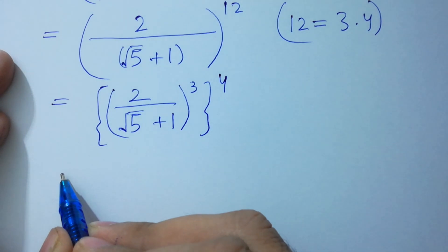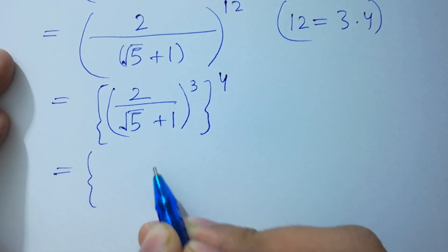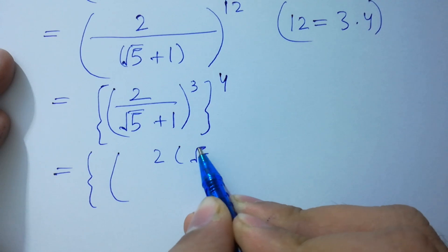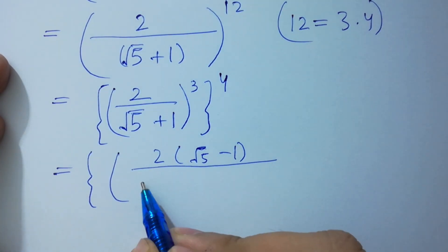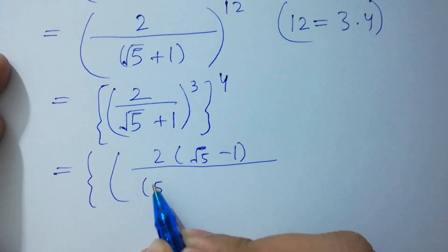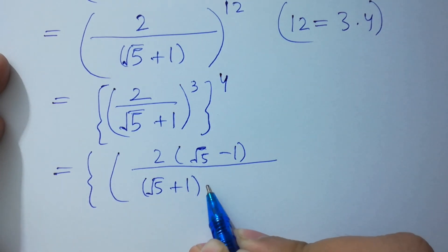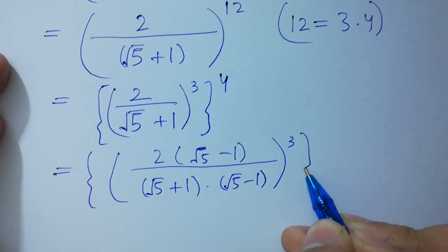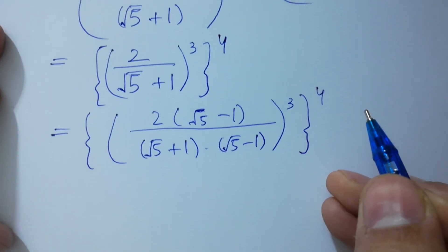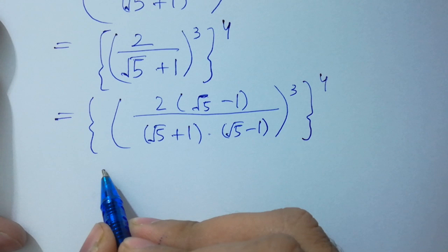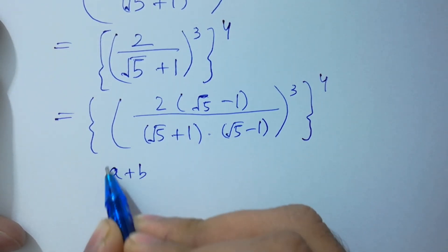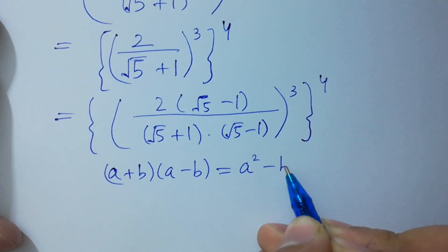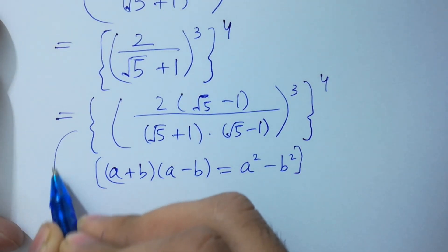By rationalizing, we have 2 times square root of 5 minus 1, over (square root of 5 plus 1)(square root of 5 minus 1), to the power 3, to the whole power 4. Using (a+b)(a-b) = a² - b², so it will be equal to: